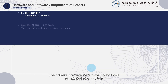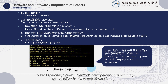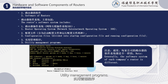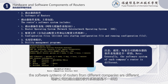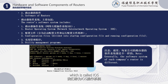The router's software system mainly includes: Router Operating System — Network Internetworking Operating System (IOS) — Configuration Files, divided into Startup Configuration File and Running Configuration File, and Utility Management Programs. Note that usually the software systems of routers from different companies are different. For example, Cisco's operating system is called IOS, and its command line interface is referred to as CLI.